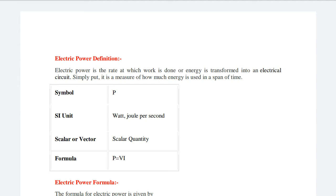Electric power is the rate at which work is done or energy is transformed into an electrical circuit. It means electric power is the rate at which work is done or energy is transformed in an electrical circuit. Simply put, it is a measure of how much energy is used in a span of time.